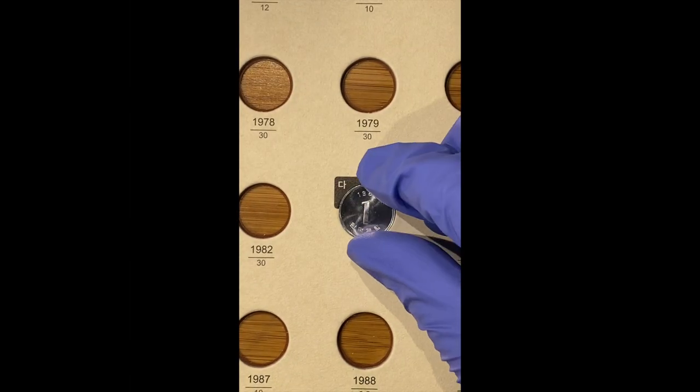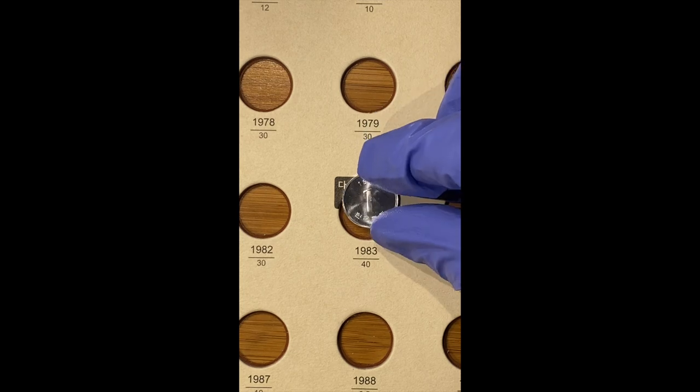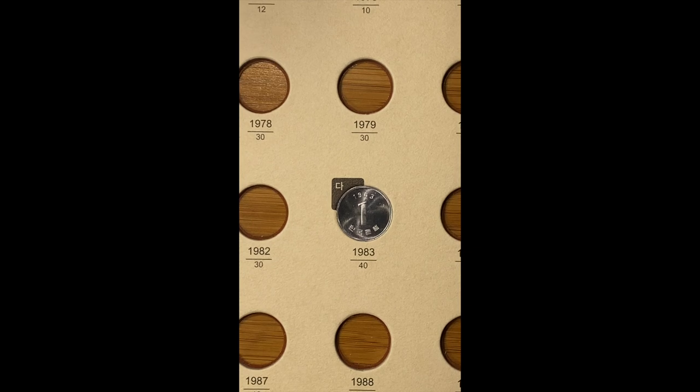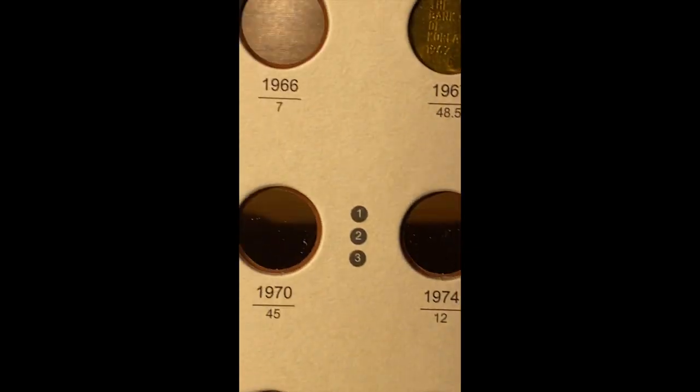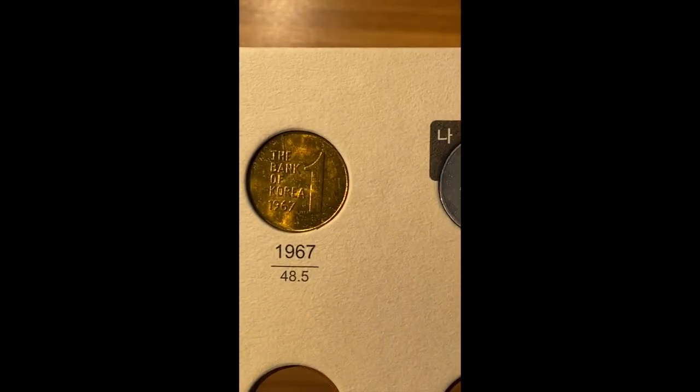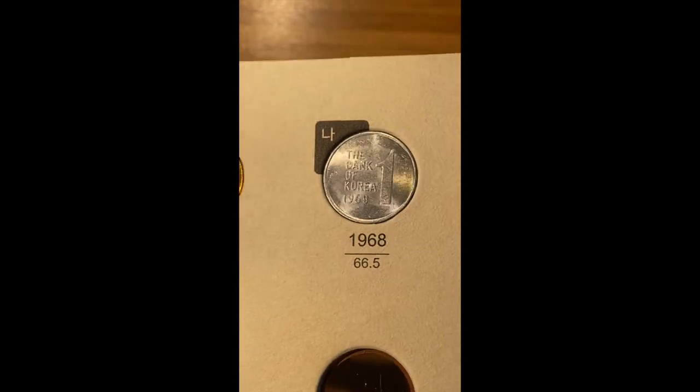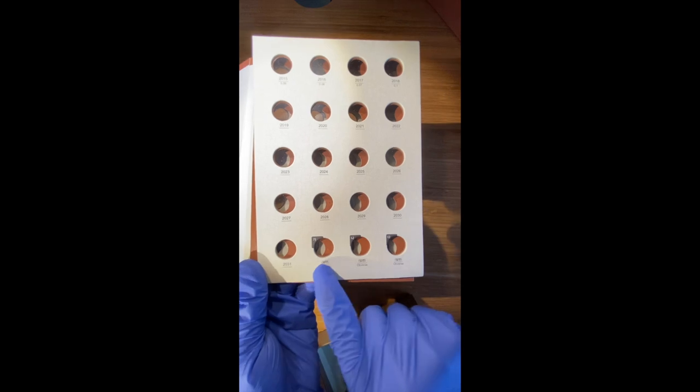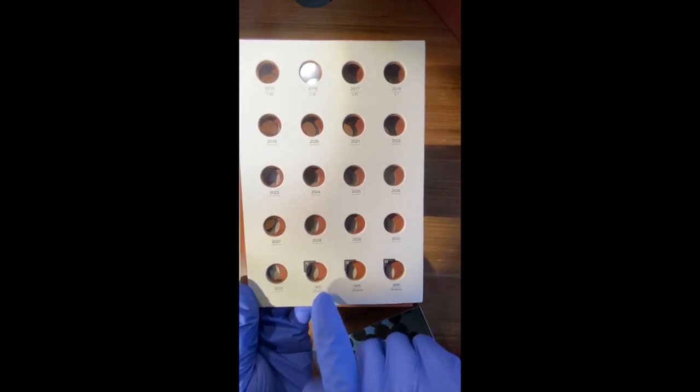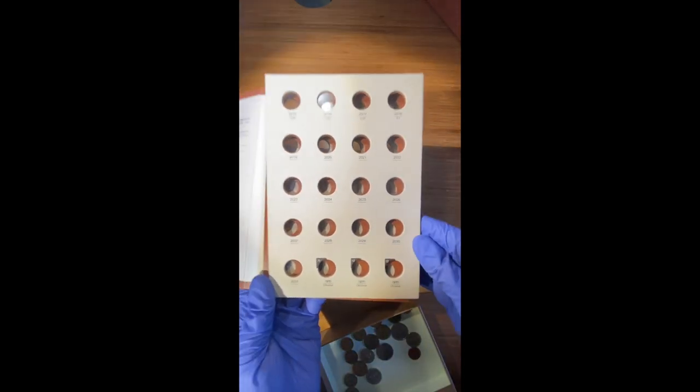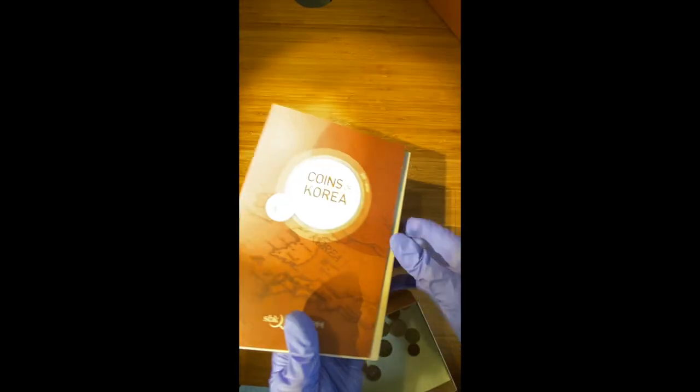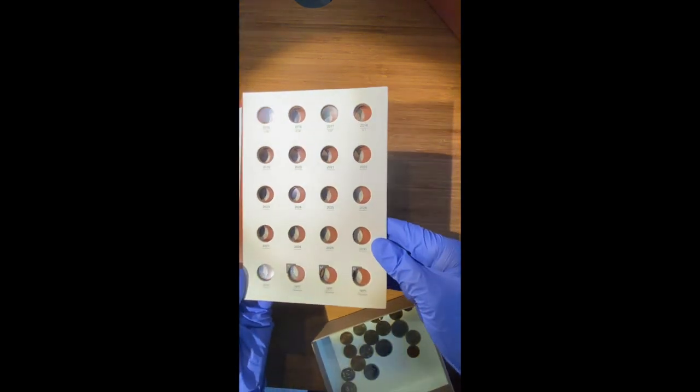And as you can see here, the acetate backing allows you to view the obverses from the reverse side of the folder. Here is the third Series one-won coin being placed into the folder. There are enough holes that extend all the way to the year 2031 and the last three holes are for displaying the three obverse designs of the three Series one-won coins. However, since there is a clear acetate back to each hole, all one has to do is flip the folder over and view the obverses through the clear acetate backing.